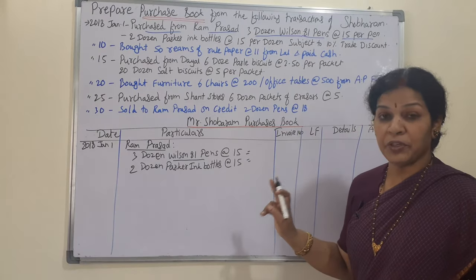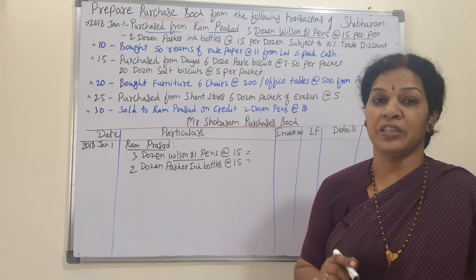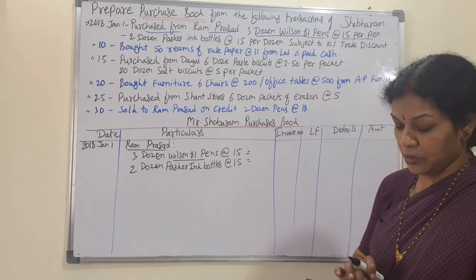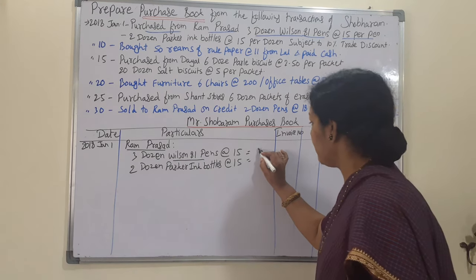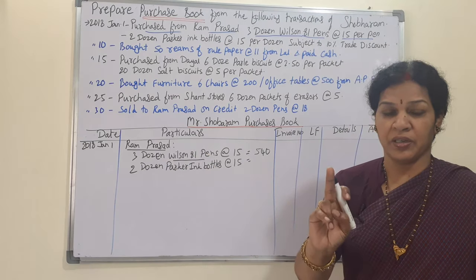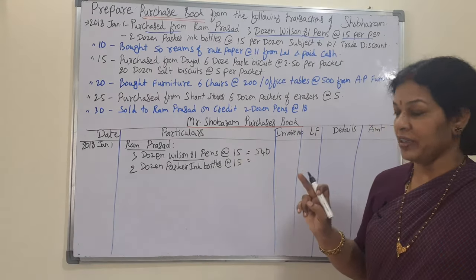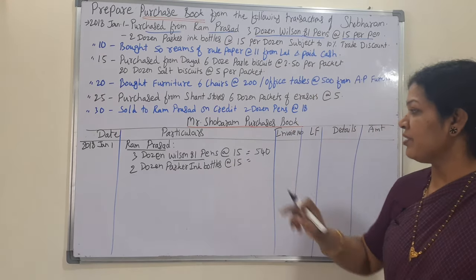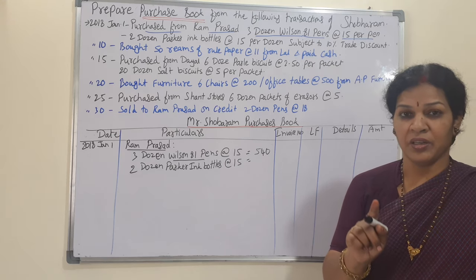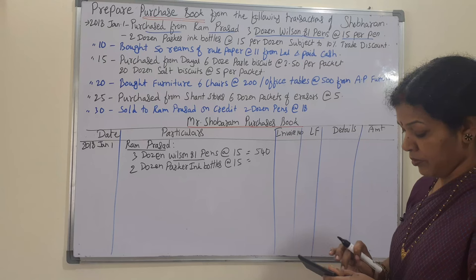For the calculation: 3 dozen means 3 × 12 = 36 pens. At the rate of 15 rupees, 36 × 15 = 540 rupees. In the same way, 2 dozen Parker ink bottles — 1 dozen is 12, so 2 dozen is 24. At the rate of 15 rupees, 24 × 15 = 360 rupees. We write these amounts in the detail column.